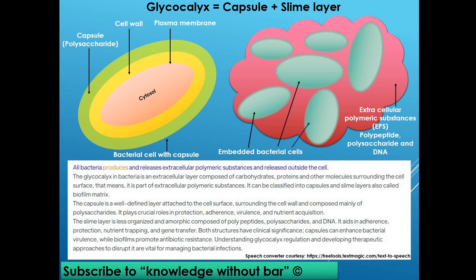All bacteria produce and release extracellular polymeric substances outside the cell. The glycocalyx in bacteria is an extracellular layer composed of carbohydrates, proteins, and other molecules surrounding the cell surface, making it part of extracellular polymeric substances. It can be classified into capsules and slime layers, also called biofilm matrix.